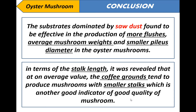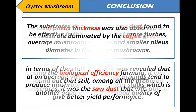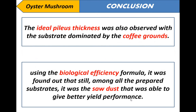In terms of stalk length, it was revealed that on average, coffee grounds tend to produce mushrooms with smaller stalks, which is another good indicator of quality. The ideal pileus thickness was also observed with the substrate dominated by coffee grounds. Using the biological efficiency formula, it was found that among all the prepared substrates, sawdust was able to give the best yield performance.